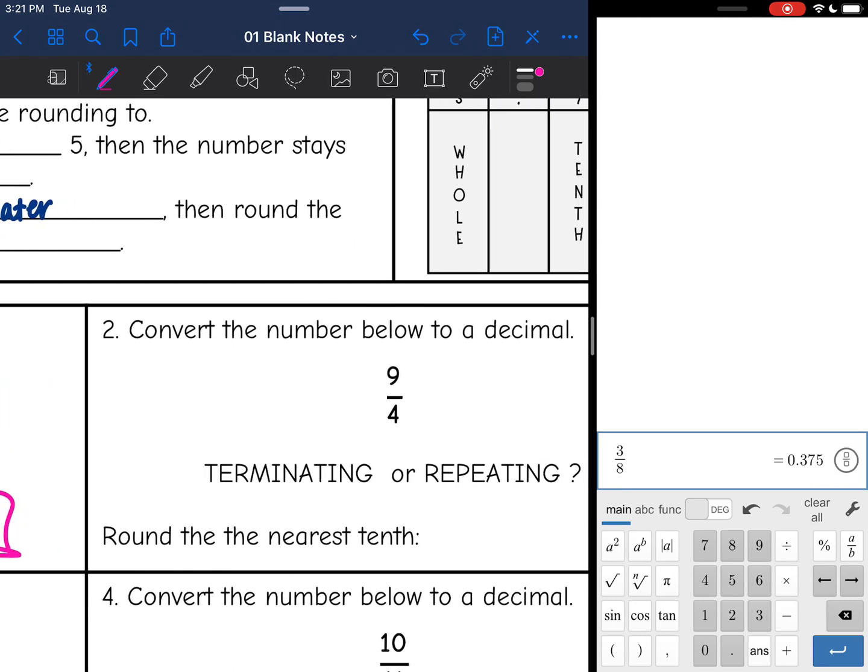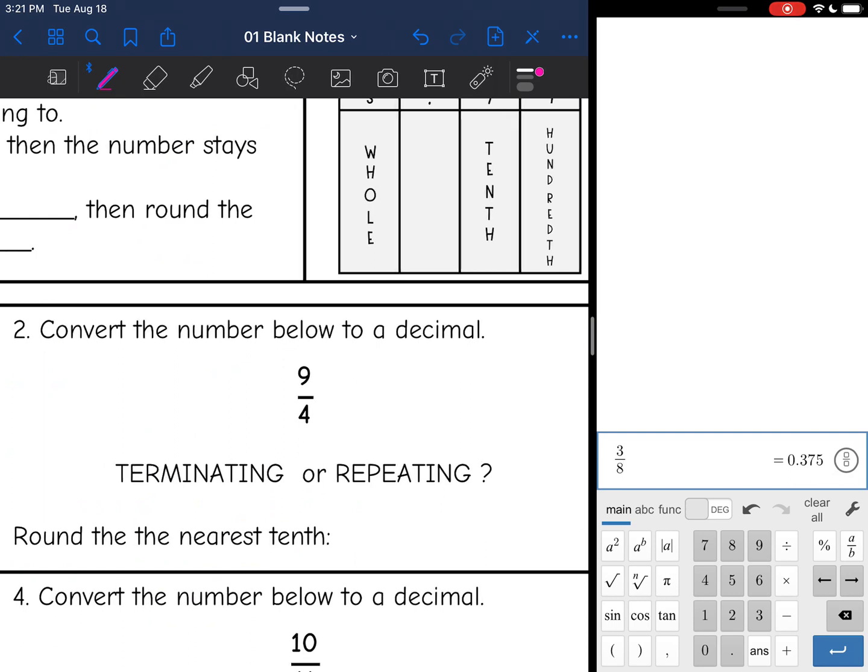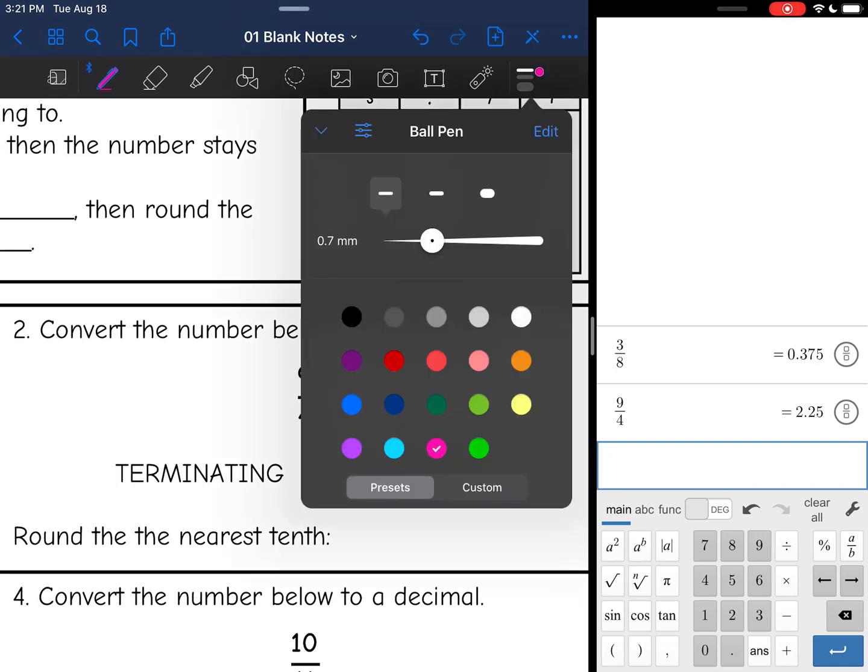All right, let's look at our next example. I need to convert this number to a decimal, decide if it's terminating or repeating, and then round it. So I'm going to start by doing 9 divided by 4. There's my decimal, 2.25.